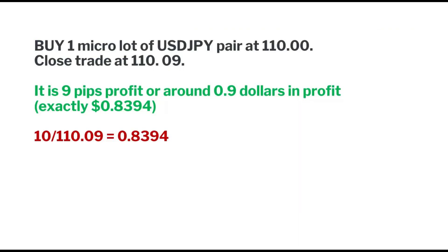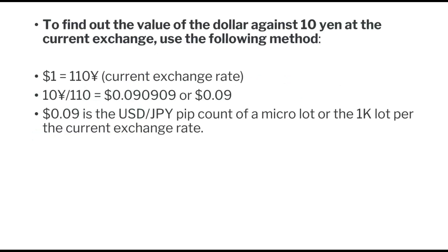So, you purchase one micro lot of USD/JPY at 110 and close the trade at 110.009. That's nine pips profit, or around $0.9 in profit. But how do we calculate this? We divide 10 by the exchange rate. You can have two tasks when dealing with Japanese yen pairs: the first is calculating pip value in dollars, and the second is finding the value of the dollar against 10 yen at the current exchange rate.